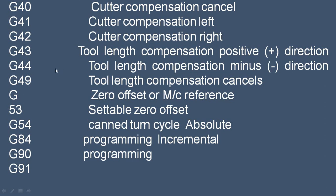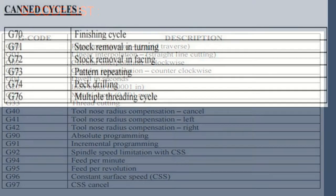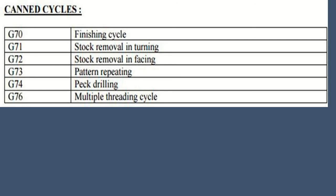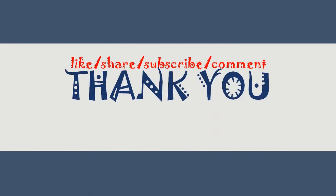G44 is tool length compensation in the minus direction; G49 is tool length compensation cancel. These G-codes give the detailed data, and the complete G-code list is provided. Thank you — stay connected for the next videos.